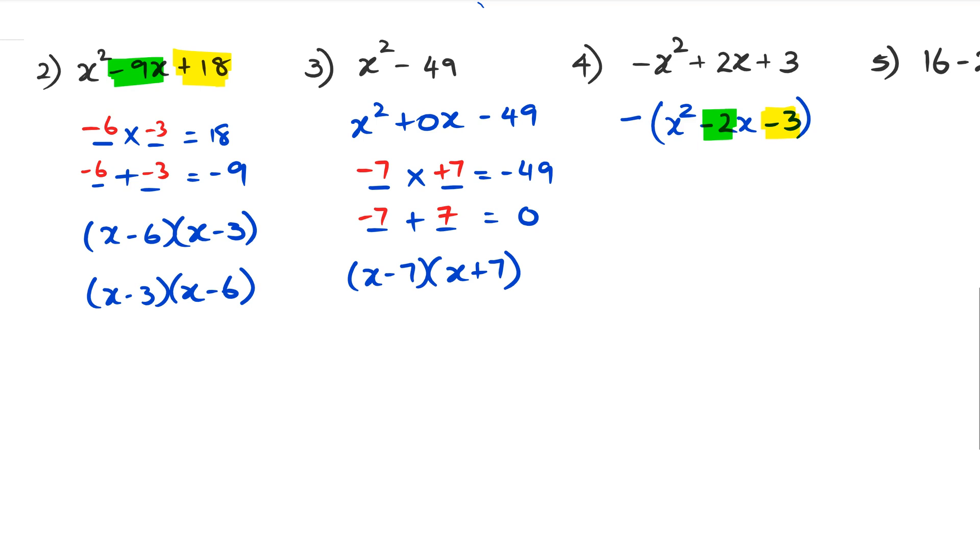As for the negative sign, we're just going to leave it outside, let it hang out there. So we're looking for two numbers that multiply to negative 3 and add up to negative 2, so they've got to be the same numbers. We can see that it is going to be negative 3 times positive 1, and negative 3 plus 1 equals negative 2.